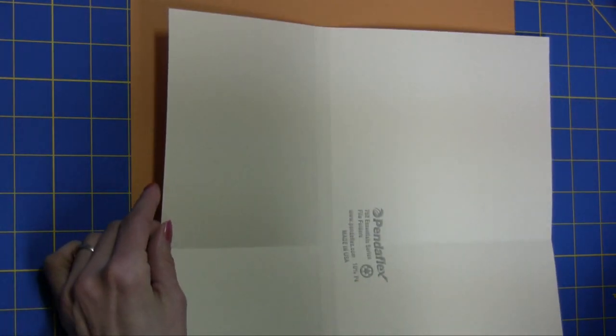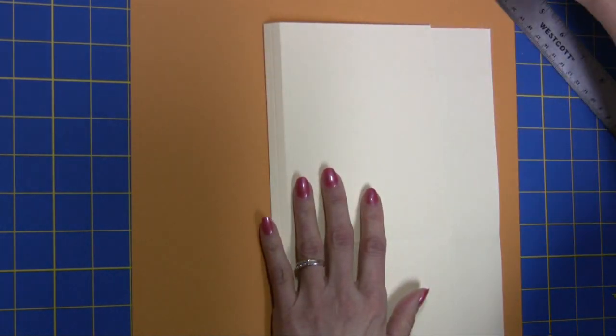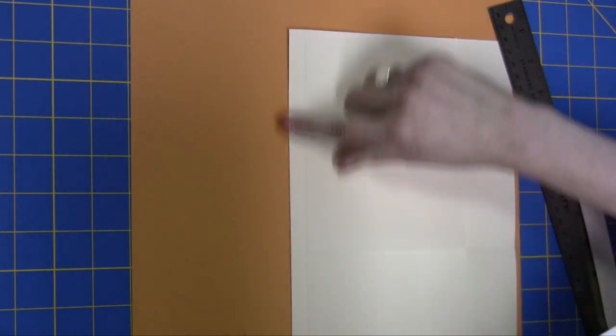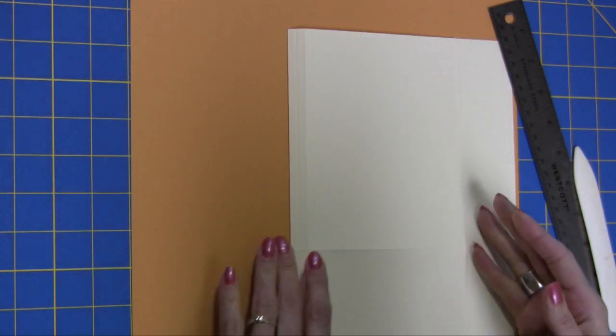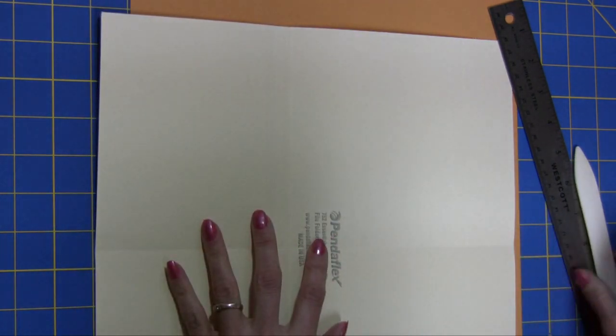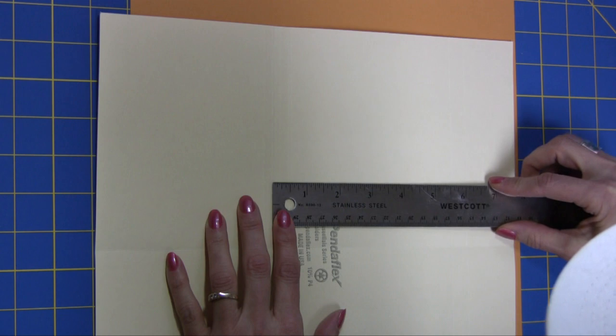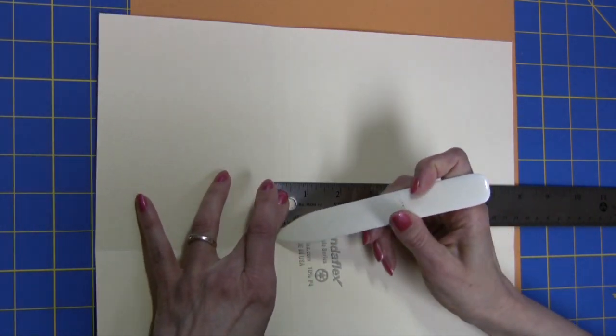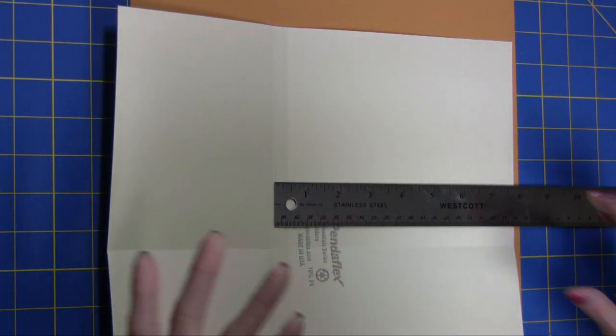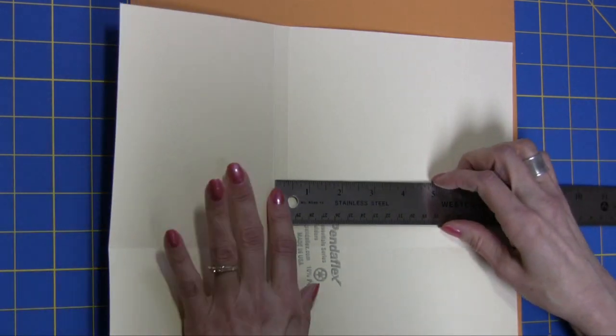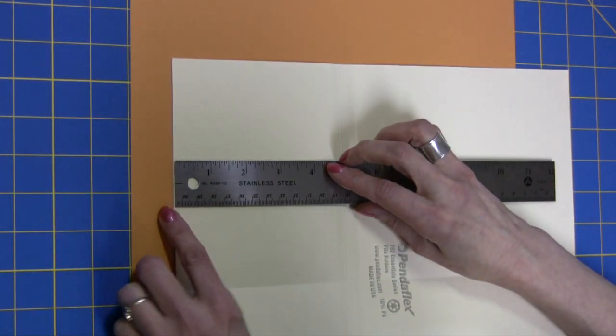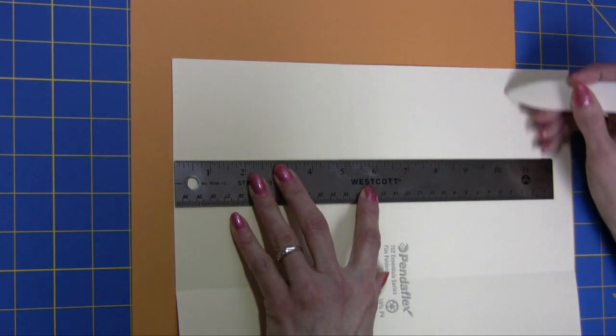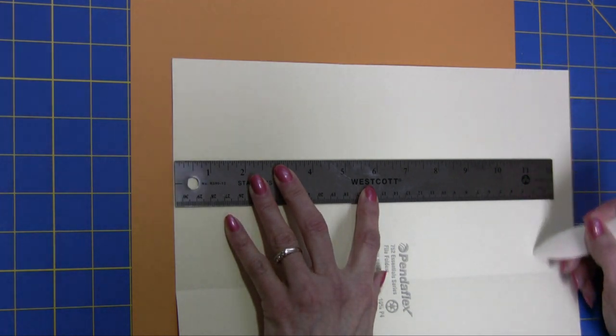Now, the next step is you'll want to make some score lines. This is the normal folder where it's folded, the file folder main fold. You're going to open it up, and then measure a 1/2 inch from the left of the fold and score at a 1/2 inch. You can use a bone folder, score pal, or your Cutterbee. Then you're going to measure from the left side and score at 10 1/2 and 11 inches all the way down.